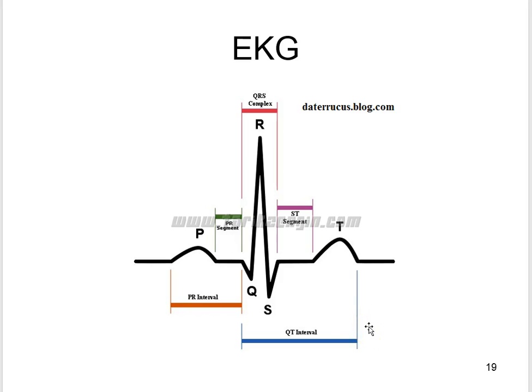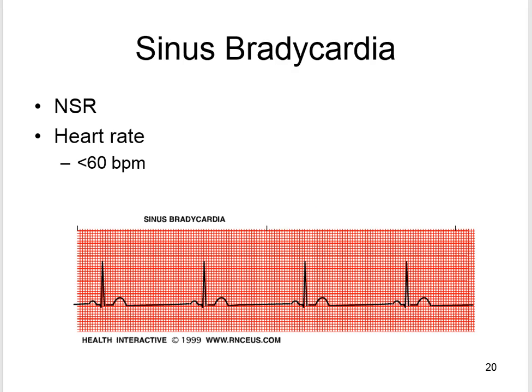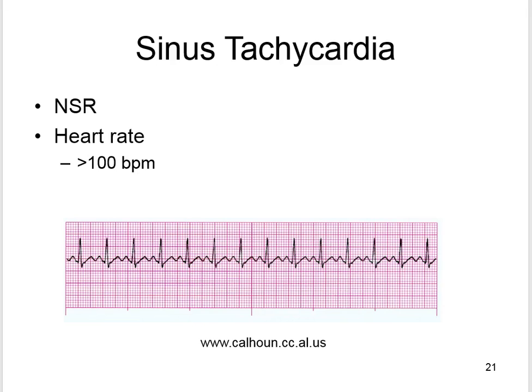The EKG represents electrical current moving through the heart during a heartbeat. A normal EKG shows a normal sinus rhythm. Dysrhythmias are abnormal heart rhythms — either irregular, too fast, or too slow. Sinus bradycardia means the rhythm starts in the SA node but the heart rate is less than 60 beats per minute — the SA node fires slower than normal. Sinus tachycardia is also a normal sinus rhythm but the heart rate is greater than 100 beats per minute; the normal range is 60 to 100 beats per minute.